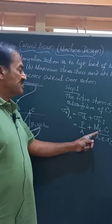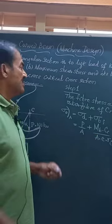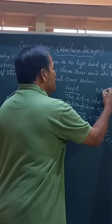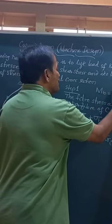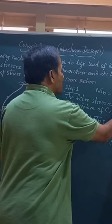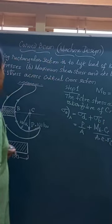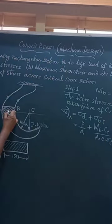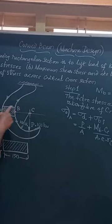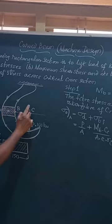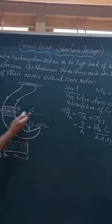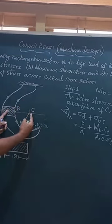bending moment. This bending moment is given by MB equal to P into RC, P multiplied by RC. RC is the distance of the centroidal axis of the cross section to the center of curvature, this gap.